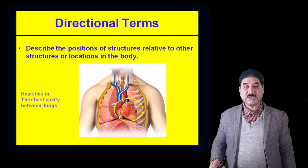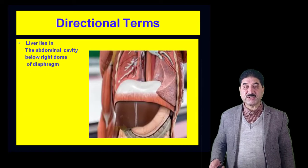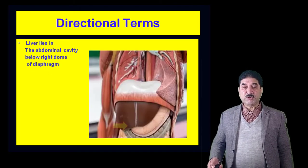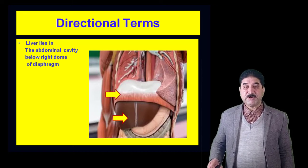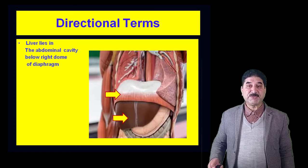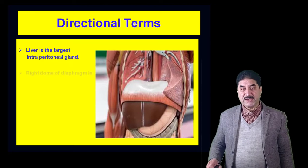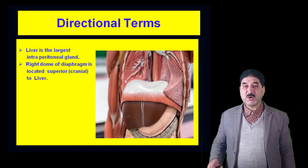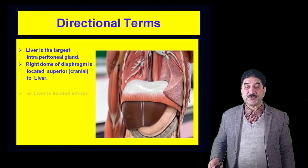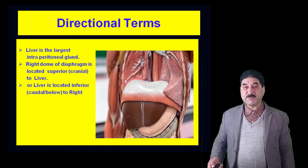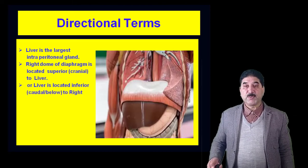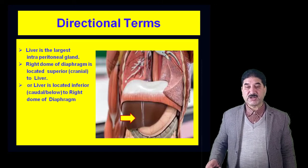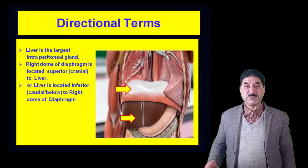Directional terms describe positions of structures related to other structures or locations in the body. For example, the heart lies in the chest cavity between the lungs. The liver lies in the abdominal cavity below the right dome of the diaphragm. The right dome of the diaphragm is located superior or cranial to the liver, and the liver is located inferior or caudal to the right dome of the diaphragm. Superior is also called cranial, meaning towards the head end of the body.